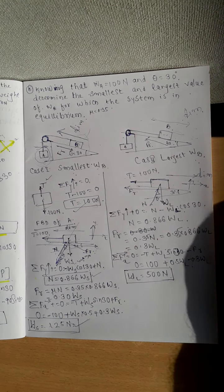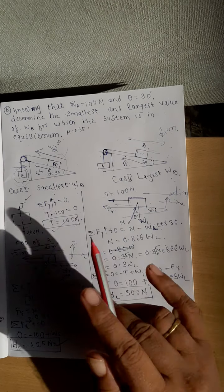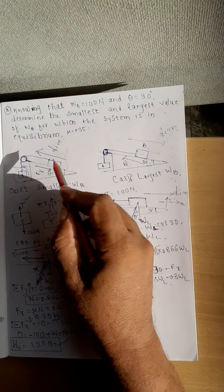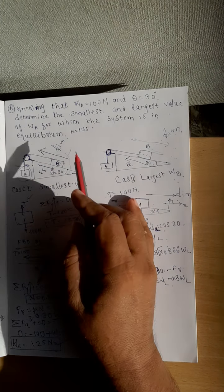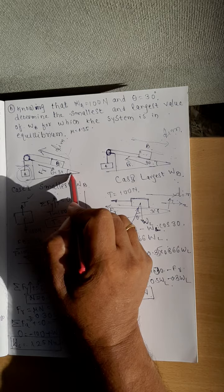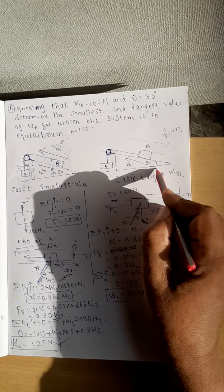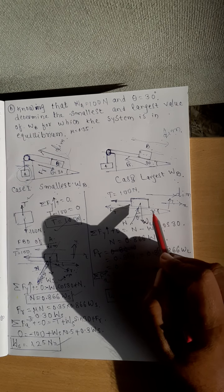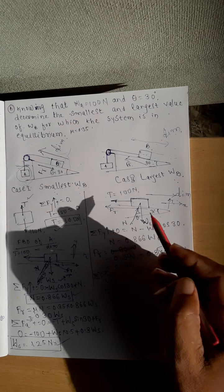Case 2 — Largest value of WB. If the weight keeps increasing, block A moves upward and block B moves downward. The difference from the smallest weight case is: for smallest weight, the body moves upward so frictional resistance acts downward; for largest weight, the body moves downward so frictional resistance acts upward. The free-body diagram is otherwise the same.